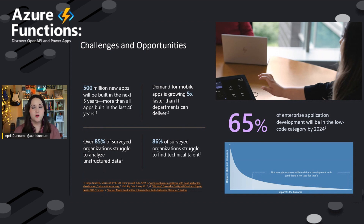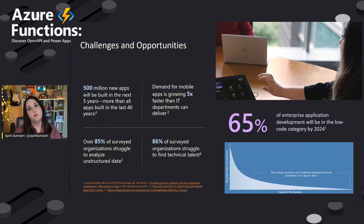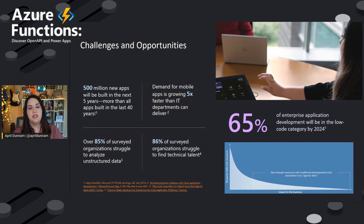So what's the opportunity that can arise from these challenges? That's where low code technology can really help us bridge that gap. We're estimating about 65% of enterprise application development will be in the low code space by 2024, which is just three years from now. Low code technology has already taken off quite a bit and is going to keep being used exponentially over the next few years to help bridge the need for application development.